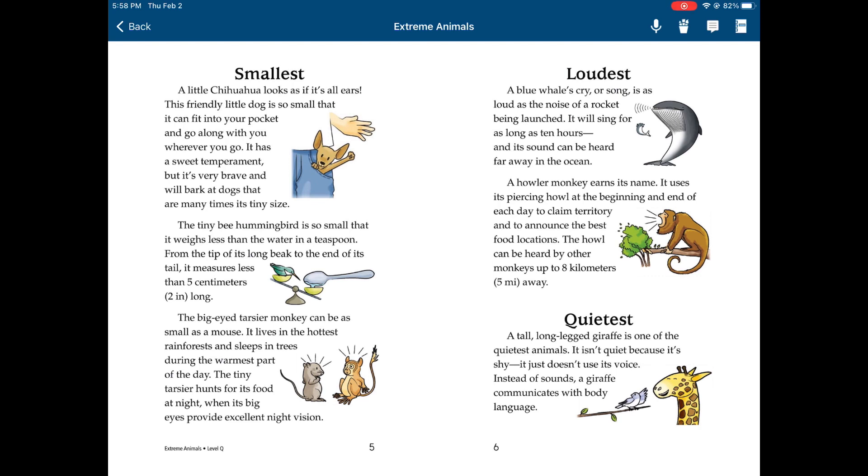The big-eyed tarsier monkey can be as small as a mouse. It lives in the hottest rainforest and sleeps in trees during the warmest parts of the day. The tiny tarsier hunts for its food at night when its big eyes provide excellent night vision.